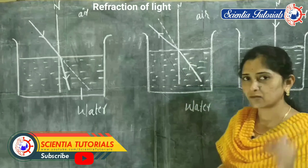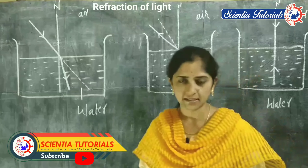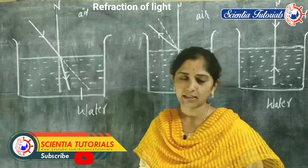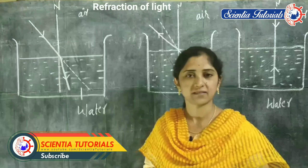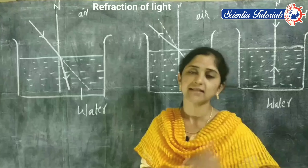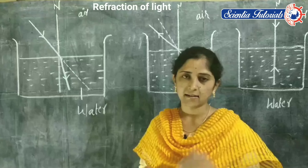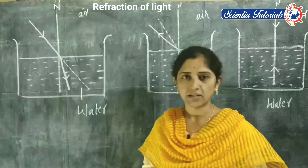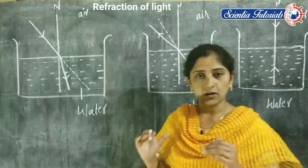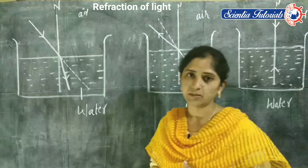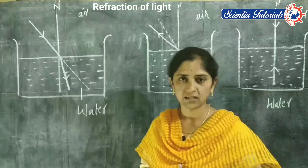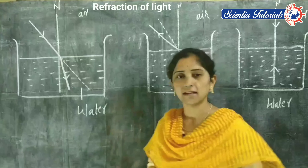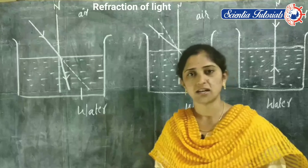Refraction means we consider two mediums. When light is traveling from one medium to another medium, it changes its velocity or speed. When it is traveling from one medium to another medium, due to the density changes of the mediums, speed will be changed and light gets bending. This process is called refraction of light.